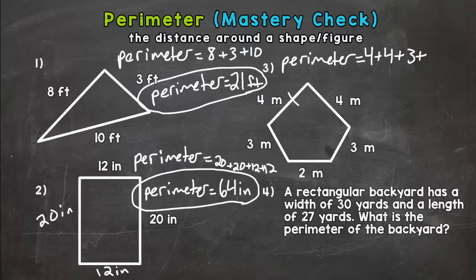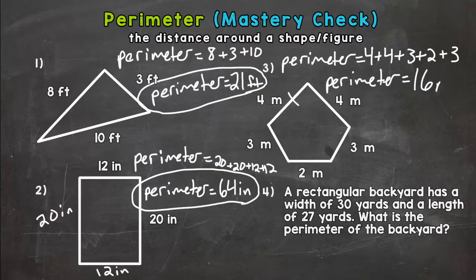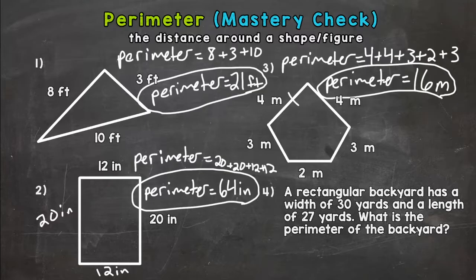So let's calculate that. We get perimeter equals 4 plus 4 is 8, plus 3 is 11, plus 2 is 13, plus another 3 is 16. And our unit of measure is meters. Now if you did 3 plus 3, then plus 2, then plus 4 plus 4, it doesn't matter what order you are adding them up. You just need to make sure you include all sides.